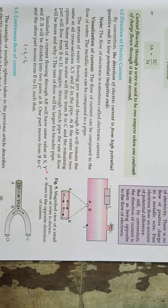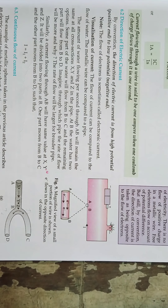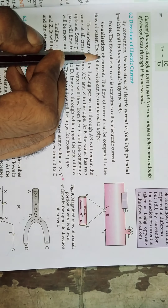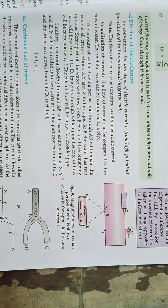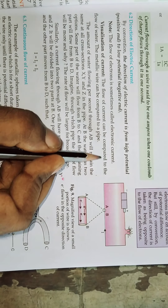In the previous video, I explained problems related to electric current and potential difference. Now in this video, we will explain the direction of electric current. By convention, the direction of electric current is from high potential to low potential.